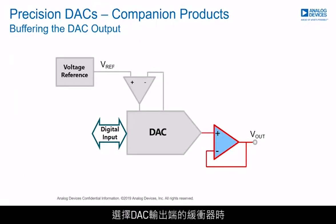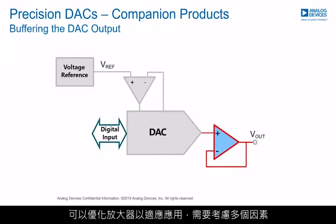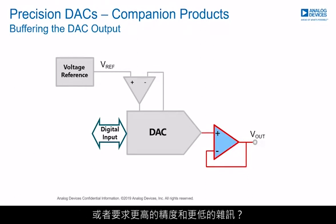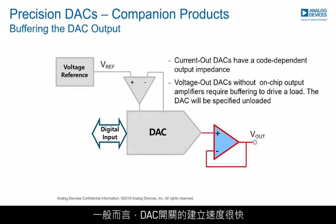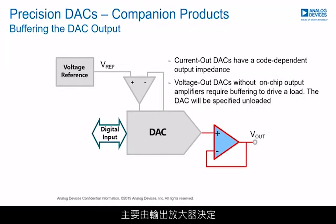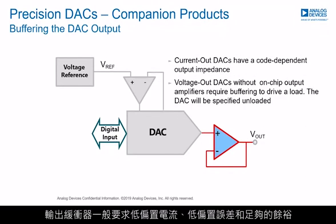When selecting the buffer at the output of the DAC, the amplifier can be optimized to fit the application, and there are a number of considerations: Is faster settling time or higher bandwidth required? Or is greater precision and lower noise needed? Cost, package size, and number of channels are also to be considered. In general, DAC switches settle quickly; consequently, the slew rate and settling time of a DAC circuit is determined largely by the output amplifier. The output buffer generally requires low bias currents, low offset errors, and sufficient headroom.